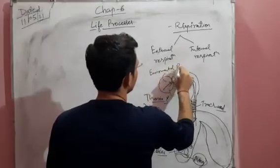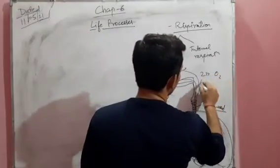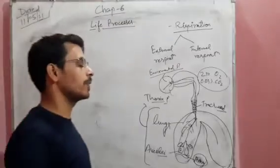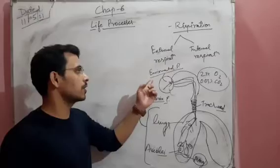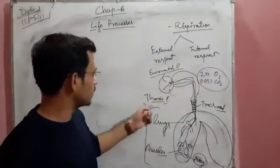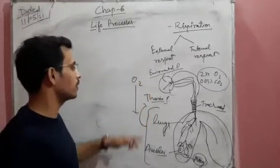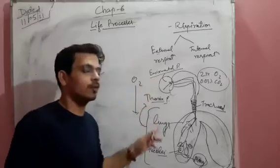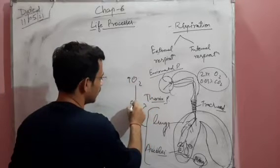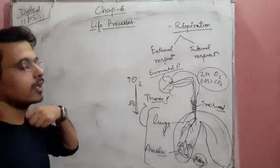In the environment there is 21% oxygen present and only 0.03% carbon dioxide. So in the external environment, the pressure of oxygen is high and in the thoracic area the pressure of oxygen is low. That is why oxygen moves from higher to lower — from the external environment to the thoracic area. In the case of CO2, the environmental pressure of CO2 is low.